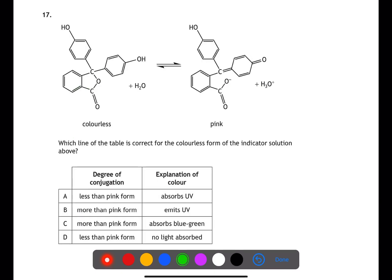Question 17 looks at conjugation. Conjugation is where we have an alternating series of single and double bonds. We have two molecules, one colourless and one pink, and we need to look at their degree of conjugation. The colourless molecule has a small degree of conjugation that we can see starting from the C double bond O into the benzene ring.